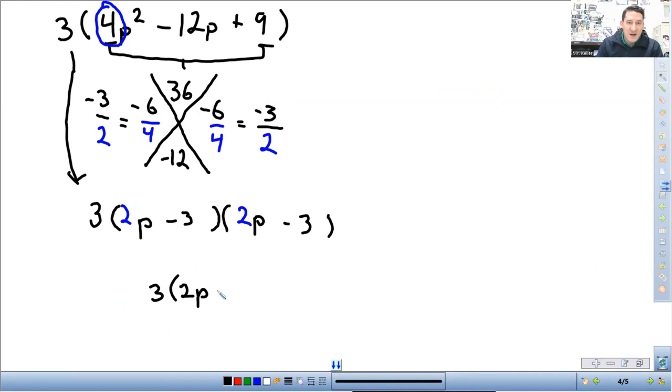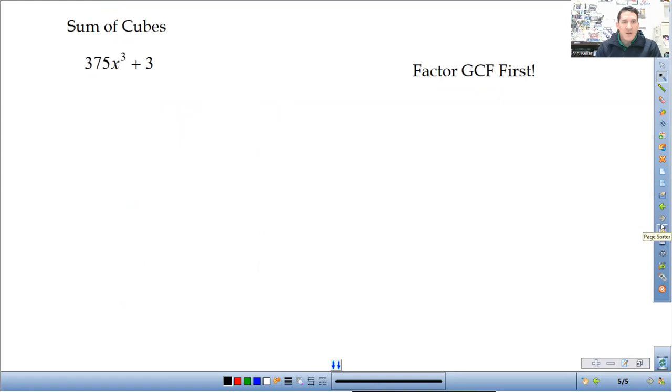And then, the last part here is squish those together. Since they are identical factors, 2p minus 3, we're going to make it 2p minus 3 squared. One more example.